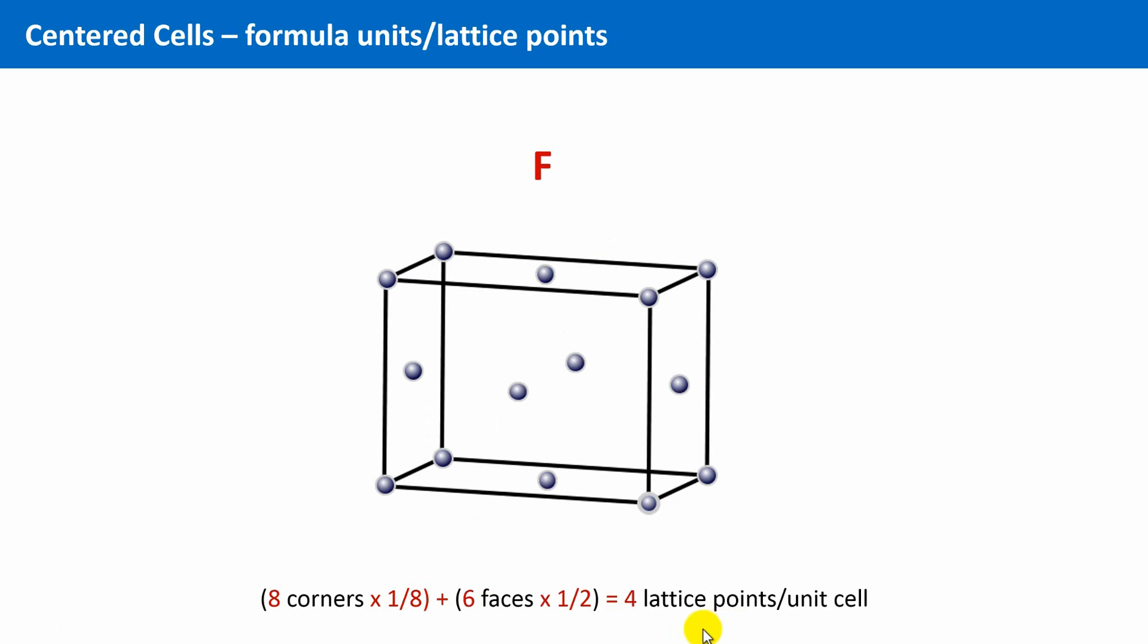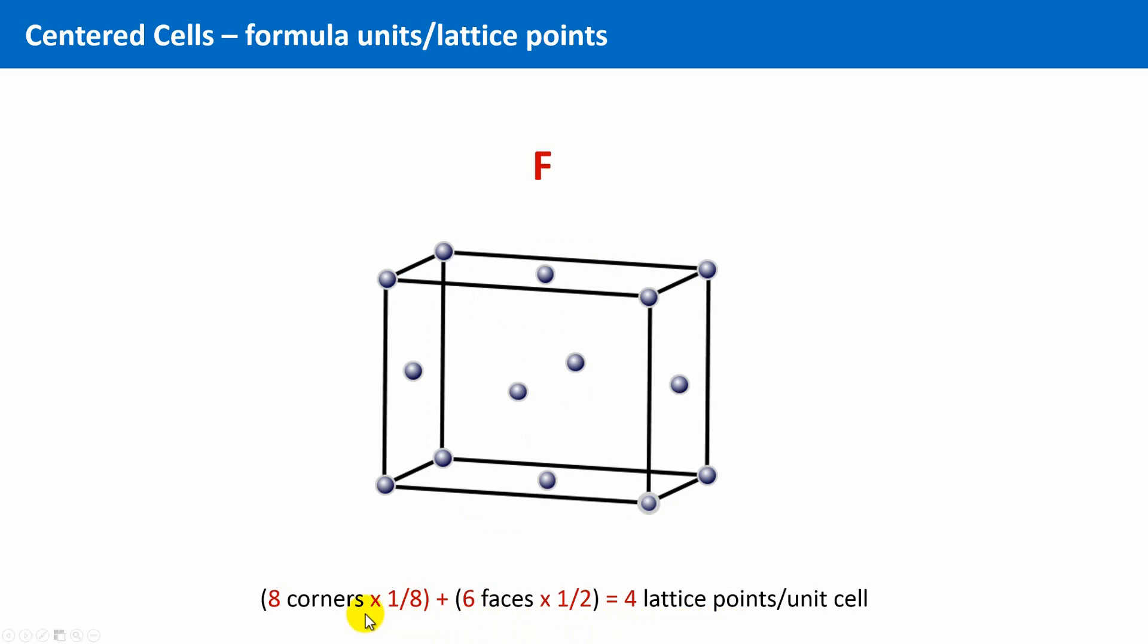And finally, in the case of F centering, we have eight times one-eighth lattice points at the corners, and six times one-half for all the lattice points at the faces, giving four lattice points in total per unit cell.